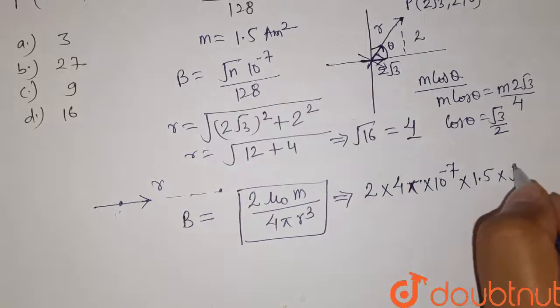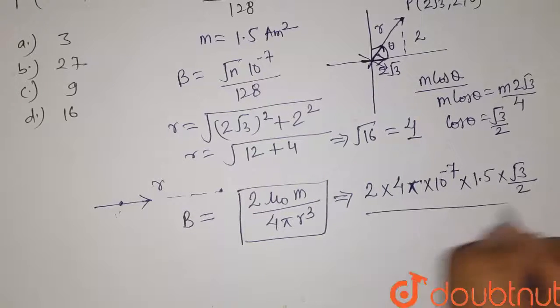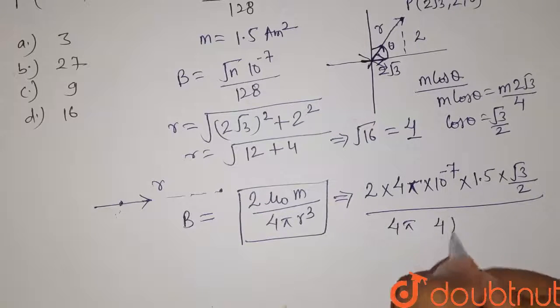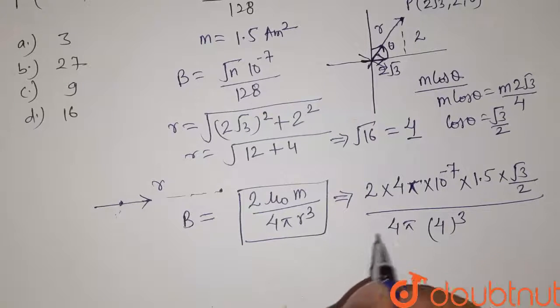Divided by 4π into the value of r is 4 here, so it is 4 cube. Now simplify this.